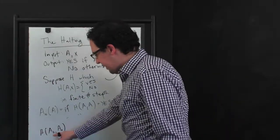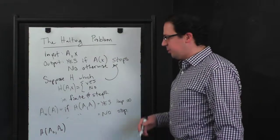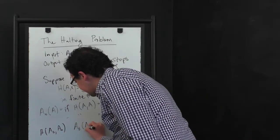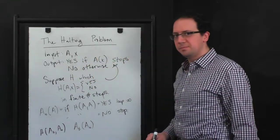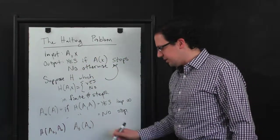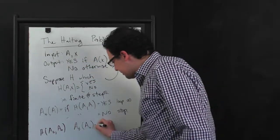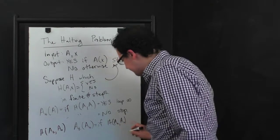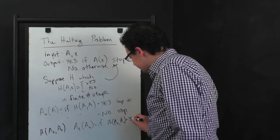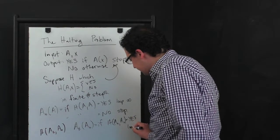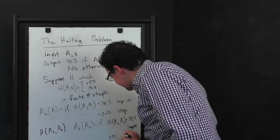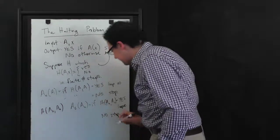So what happens here? H of A0, A0 is supposed to say correctly whether A0 halts on input A0. So what does this look like? A0 of A0 says if H of A0, A0 says yes, then loop forever. And if it says no, then stop.